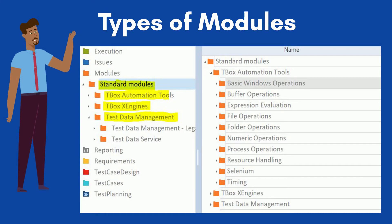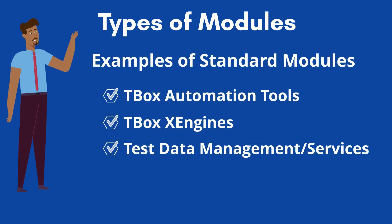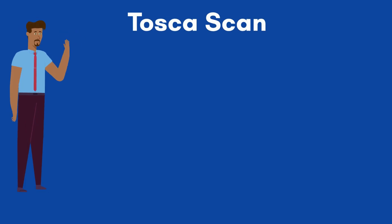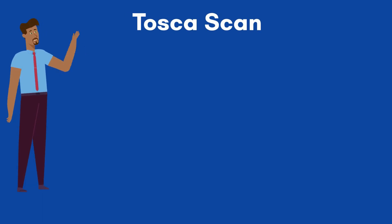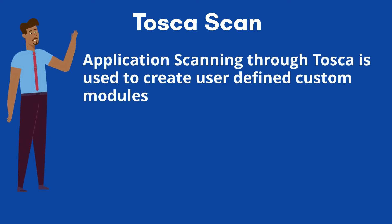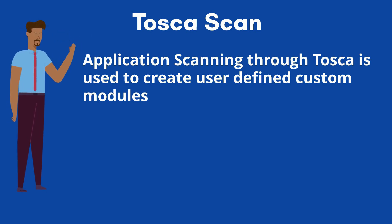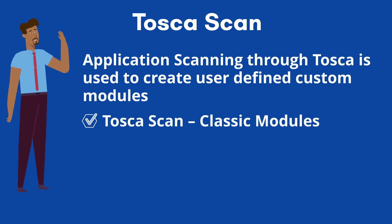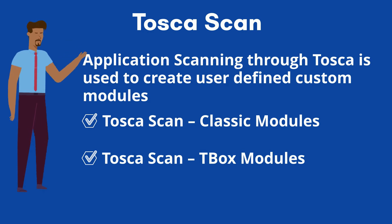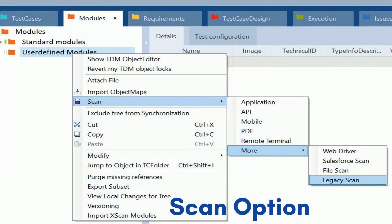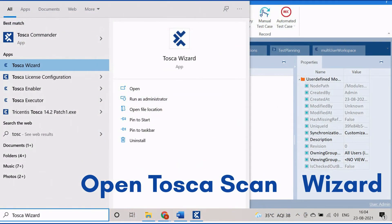Apart from this, Tosca provides many modules to support test automation activities. Now we will discuss about the most important Tosca scan feature. Tosca scan is an approach to create user-defined custom modules which contain all the technical information for any test applications. Tosca provides many engines to scan various applications. Through this tutorial we are going to learn about Tosca scan to create classic modules and Tosca scan to create Tbox modules. We can initiate Tosca scan either by right-clicking on the module folder or selecting the dynamic menu modules and clicking the scan icon. Also a stand-alone Tosca scan wizard is available to perform classic scanning.